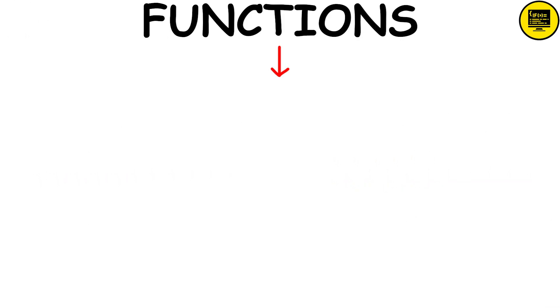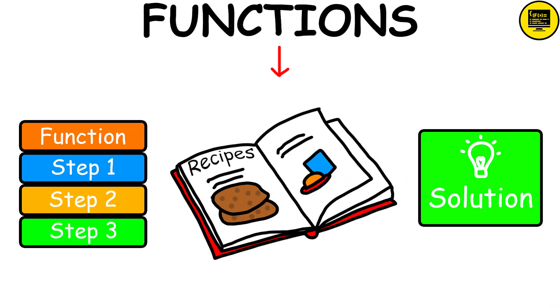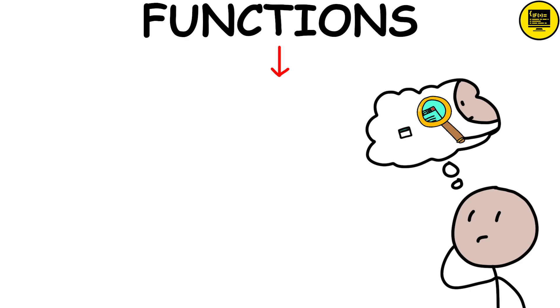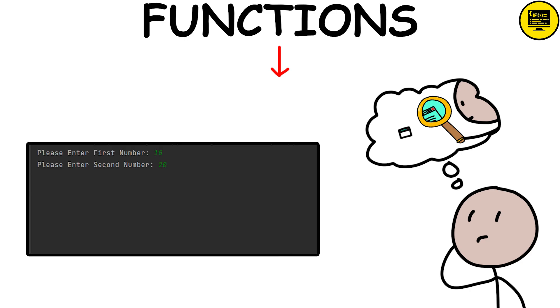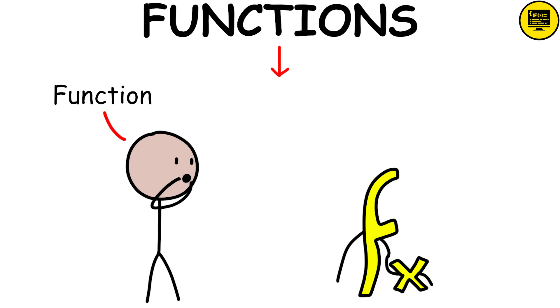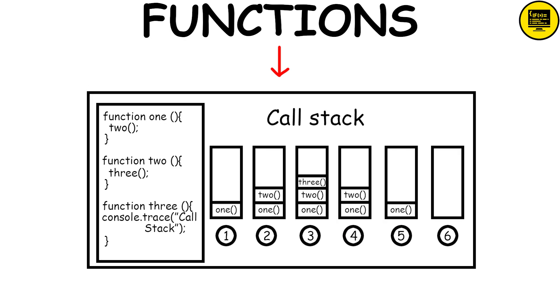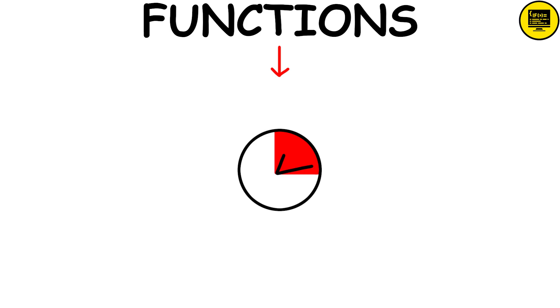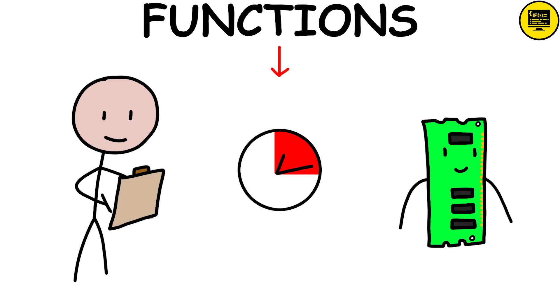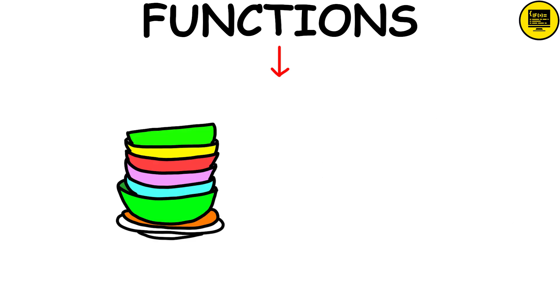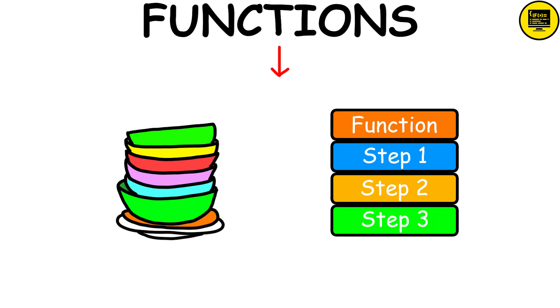Functions are like recipes. They're a series of steps that solve a problem. You can think of them as mini-programs that take in some ingredients, do something with them, and then give you a result. When you want to use a function, you just call it by name and give it whatever ingredients it needs. Every time you call a function, it gets added to the call stack, which is like a temporary memory system that keeps track of what's happening in your program. It's kind of like stacking plates in a cafeteria. Each time you call a function, it's like adding another plate to the stack.